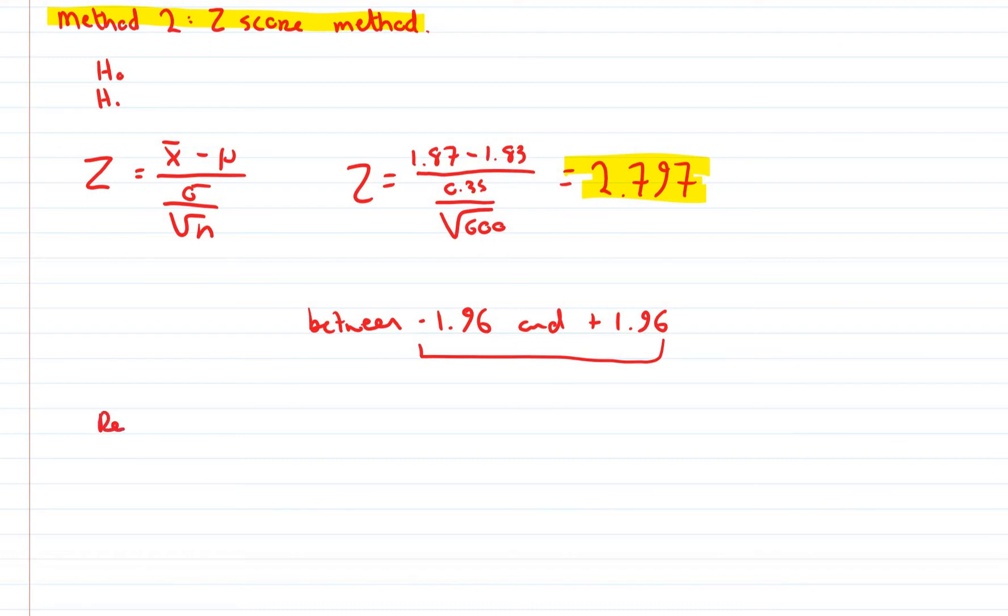So we can reject null hypothesis. If that was something like 1.52, well then that would lie within minus 1.96 and 1.96 and therefore we could accept it.